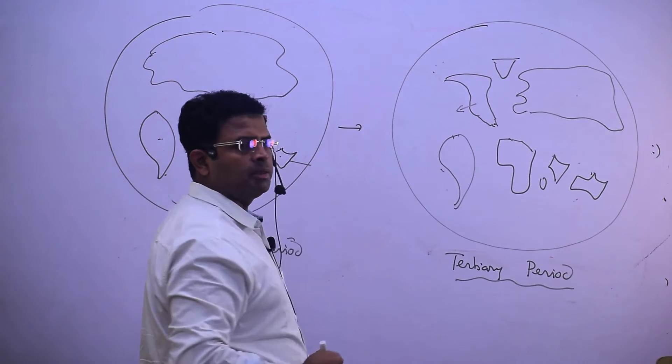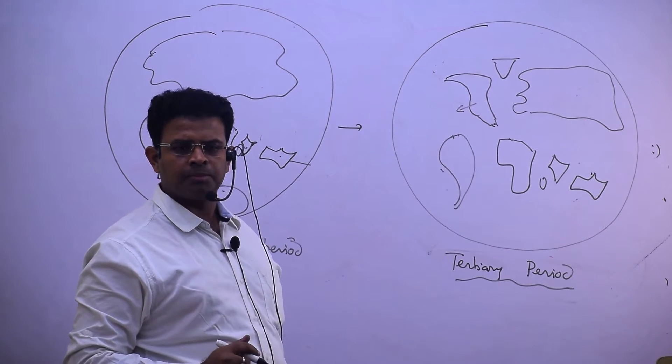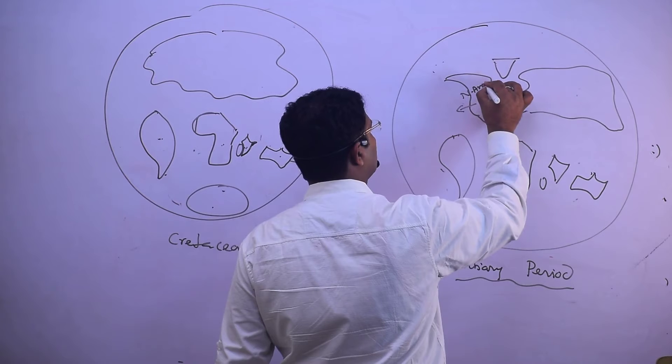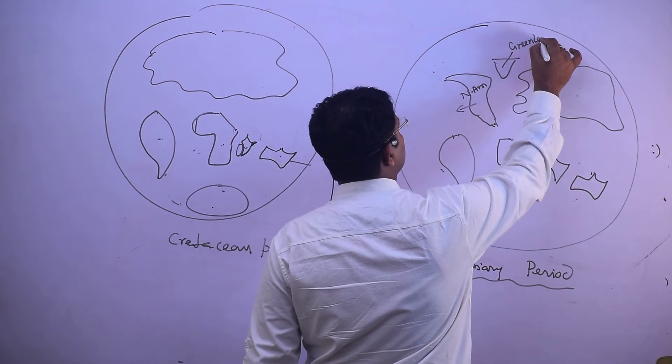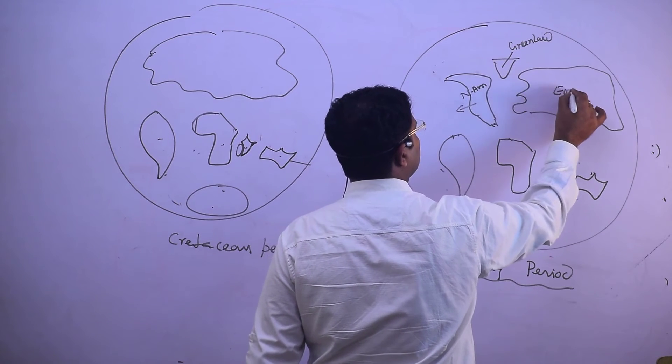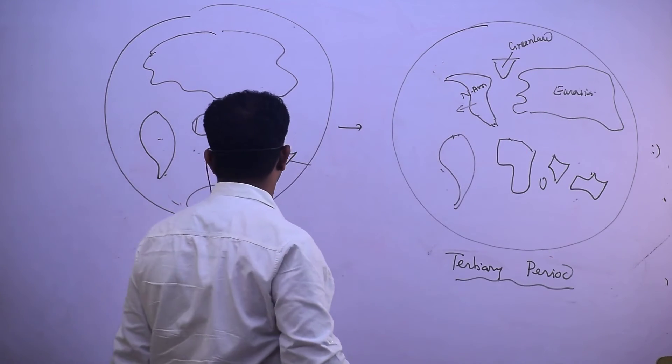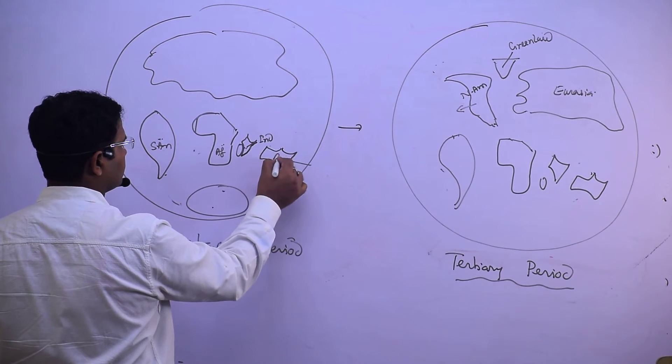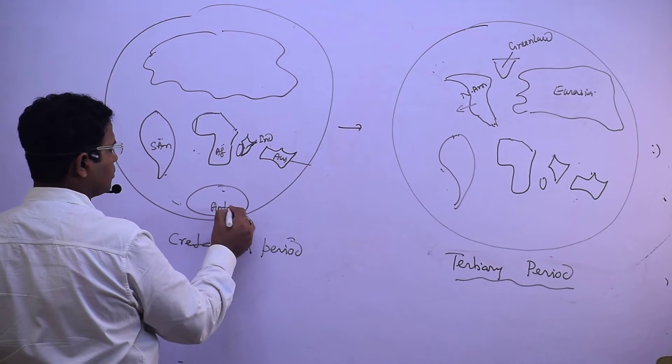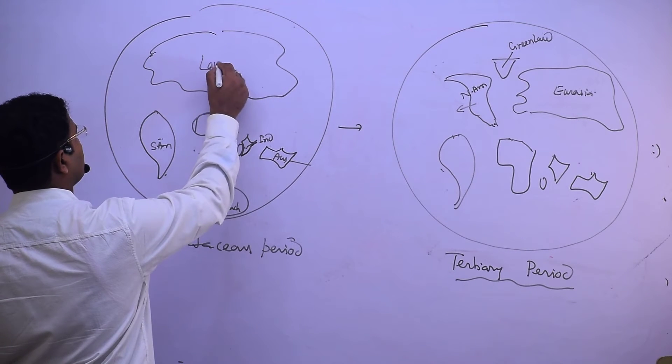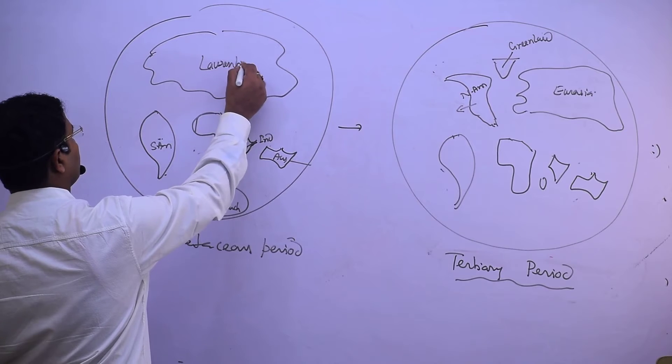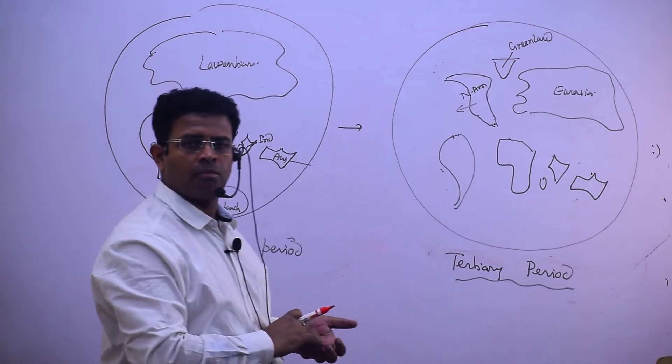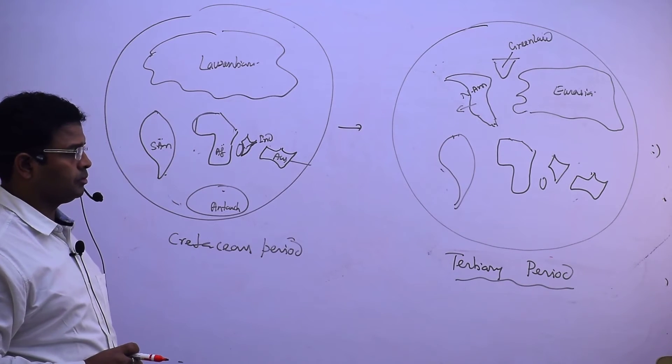Laurentian has been divided in the Tertiary period. Who has been divided? Here, Laurentian - it is in the form of North America, Greenland, and Eurasia.